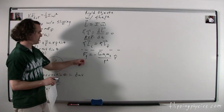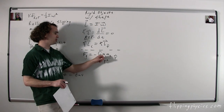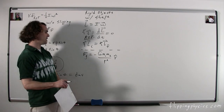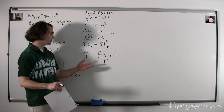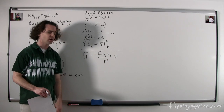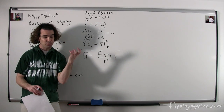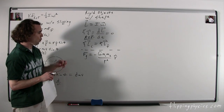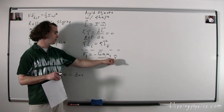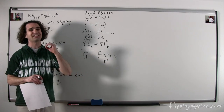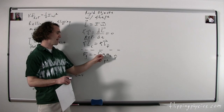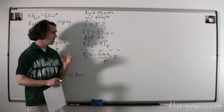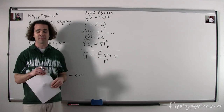Newton's universal law of gravitation: the force of gravity between any two objects equals negative big G times mass one times mass two divided by R squared, times the unit vector R̂. Big G is 6.67×10⁻¹¹ N·m²/kg². Remember: R is not the radius — R is defined as the distance between the center of masses of the two objects, even though sometimes it does coincide with the radius.